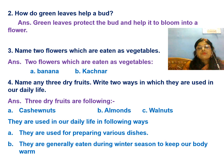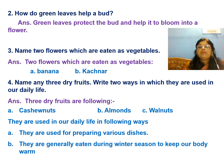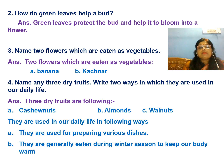Next question: how do green leaves help a bud? Green leaves protect the bud and help it bloom into a flower. Next, name two flowers which are eaten as vegetables — two flowers eaten as vegetables are banana flower and kachnar.